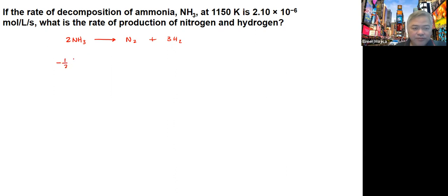If we're going to look at the relative rate here, we're going to have negative one half the change in the concentration of ammonia over t. That equals N2 over delta t and one over 3 delta H2 over delta t.